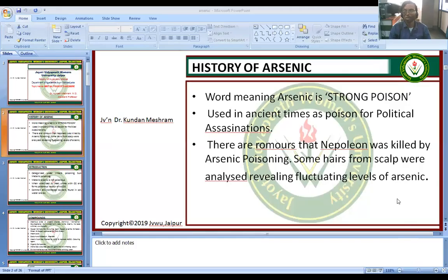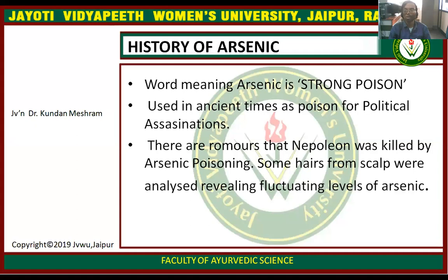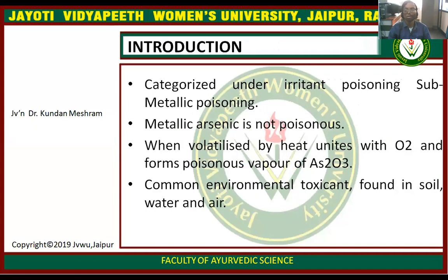First of all, we will study about the history of arsenic. The word arsenic means the strong cohesion. It was used in ancient times as a poison for political purposes. There are rumors that Napoleon was killed by arsenic poisoning. Hair samples from his skull were analyzed, revealing fluctuating levels of arsenic.